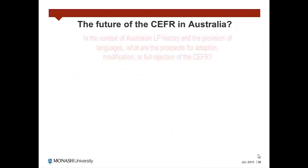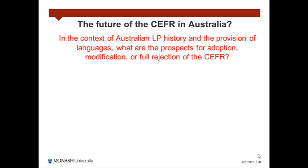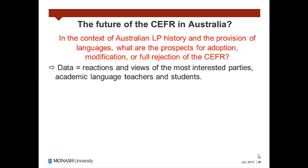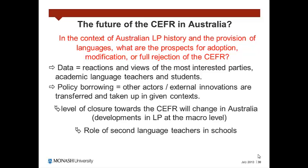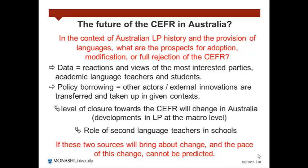In the context of Australian language policy history and the provision of languages, what are the prospects for adoption, modification or full rejection of the CFR? To understand these prospects, we have produced data showing the reactions and views of the most interested parties — academic language teachers and students. However, the literature on policy borrowing suggests that other actors are involved in determining how and to what extent external innovations are transferred and taken up in given contexts. It is likely that the current level of closure towards the CFR will change in Australia, in light of current developments in language policy at the macro level, as government appears to be moving towards a more standardized national language provision. Another source of possible innovation in adoption of the CFR are second language teachers in schools, many of whom appear to have a different or more open attitude to its use. Whether these two sources will bring about change and the pace of this change cannot be predicted.